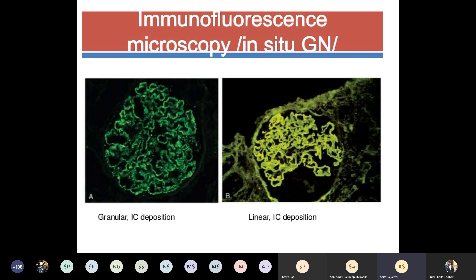To investigate glomerular damage we primarily do a renal biopsy — percutaneous biopsy is most commonly performed, followed by open renal biopsy. After confirming glomerular injury, immunofluorescence microscopy is performed. Two types of patterns are seen: granular deposits (immune complexes deposited as granules throughout the glomerulus) and linear deposits (immune complexes distributed in a linear pattern along the basement membrane).